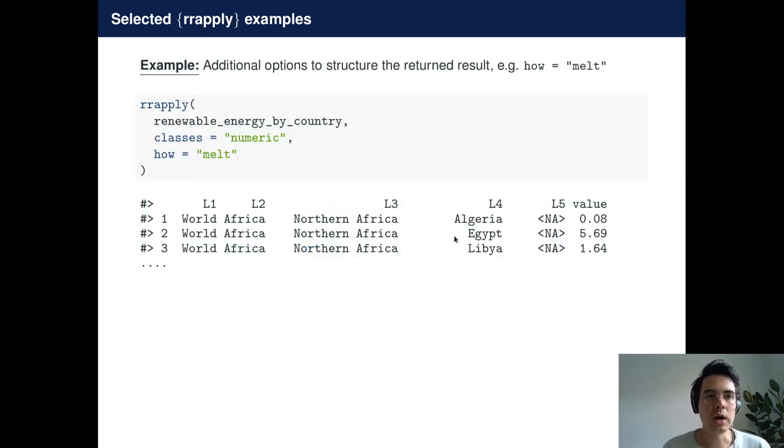So the RRApply function can be quite efficient. To illustrate this with an example, we unnest the nested list to a melted data frame using this how option.